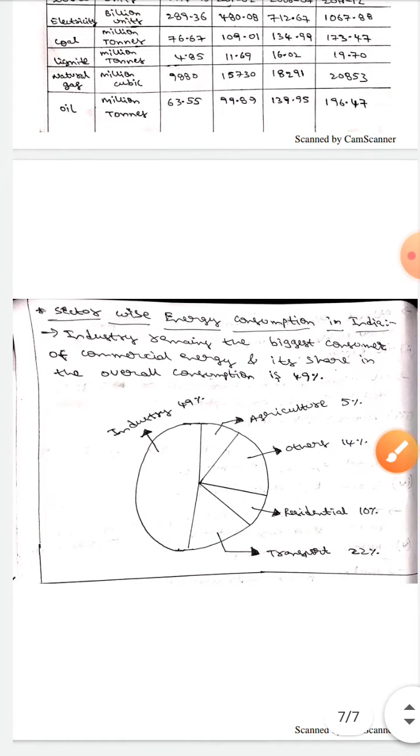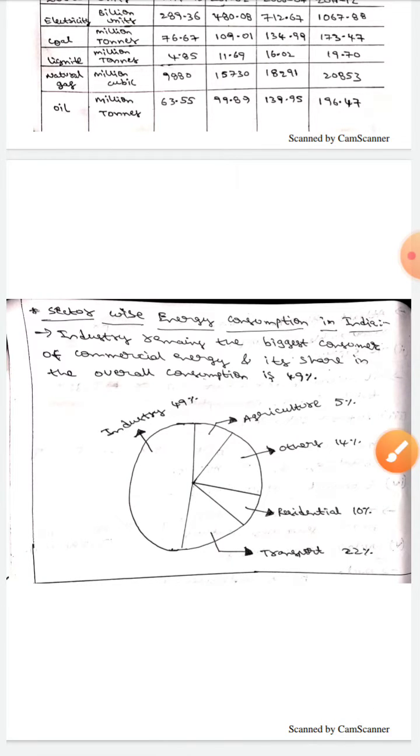If you observe this pie chart, it represents the sector-wise energy consumption in India. Here in this, industry remains the biggest consumer of commercial energy and its share is about 49 percentage, whereas agriculture is 5 percentage, residential is 10 percent, transport is 22 percent, whereas others is 14 percentage.